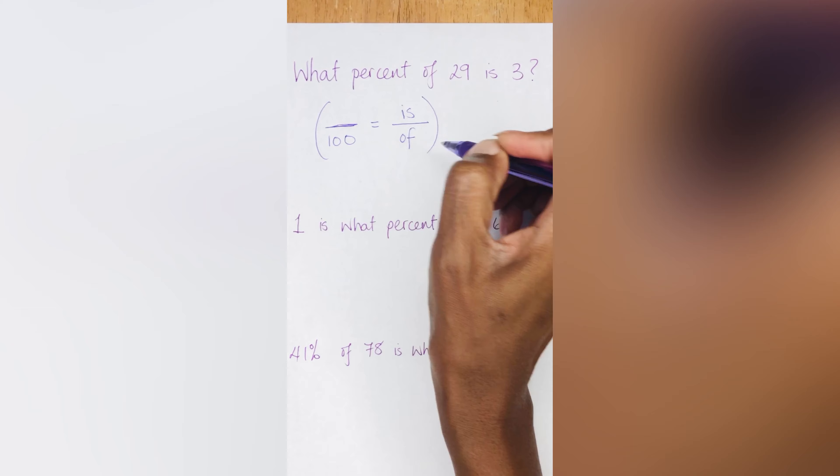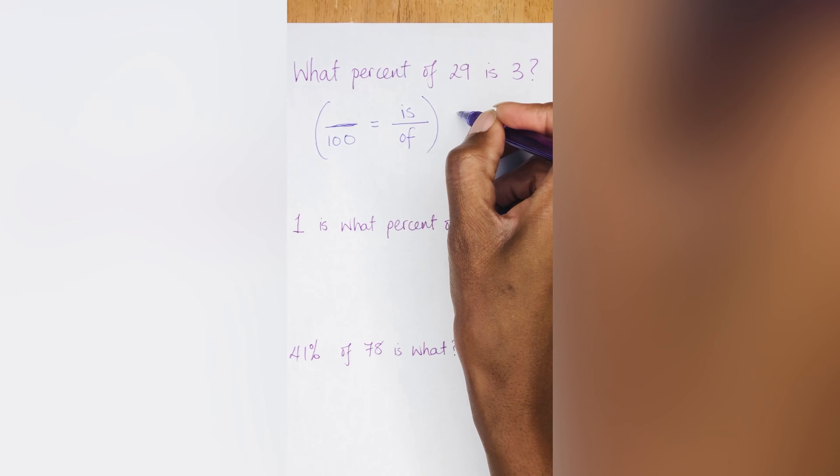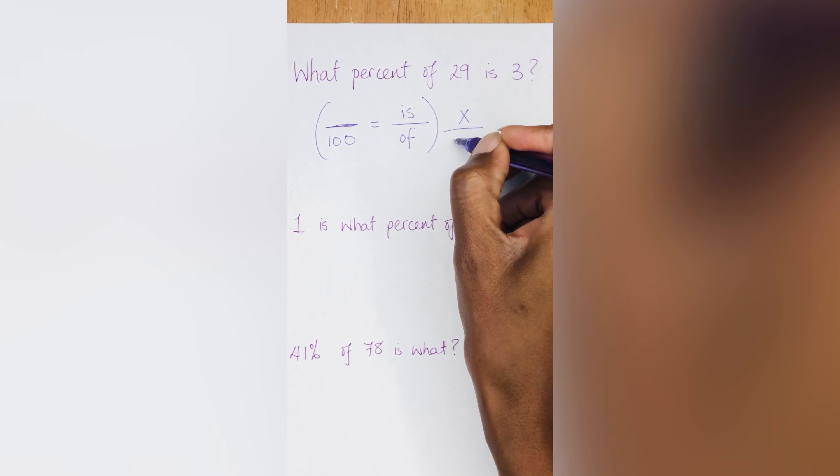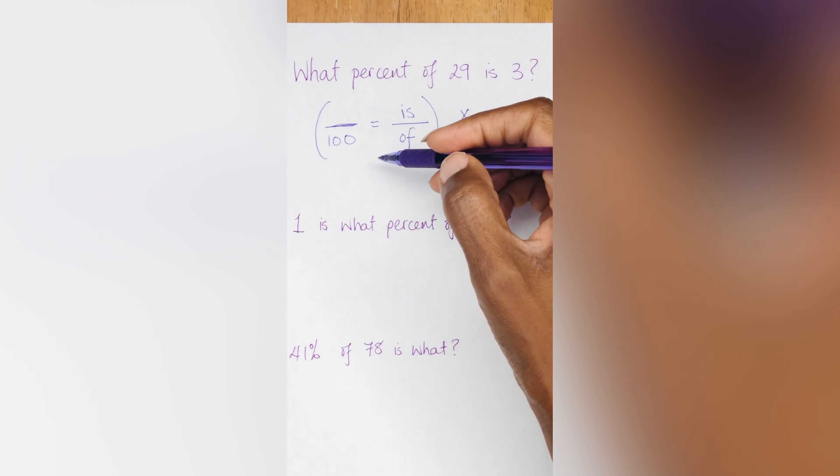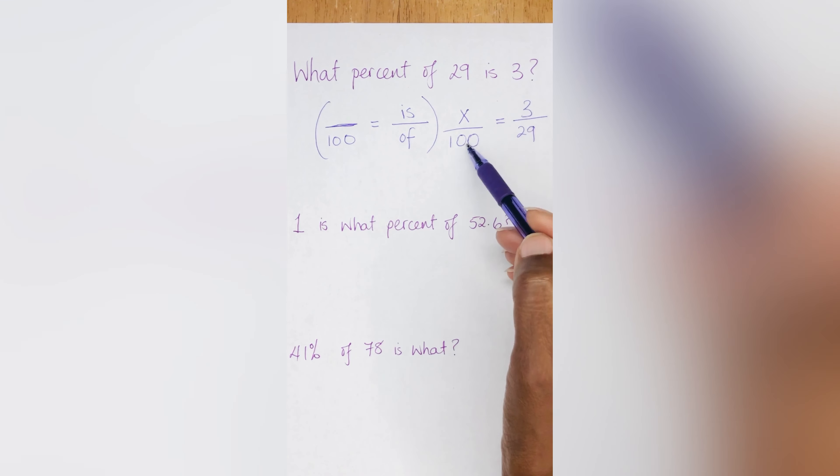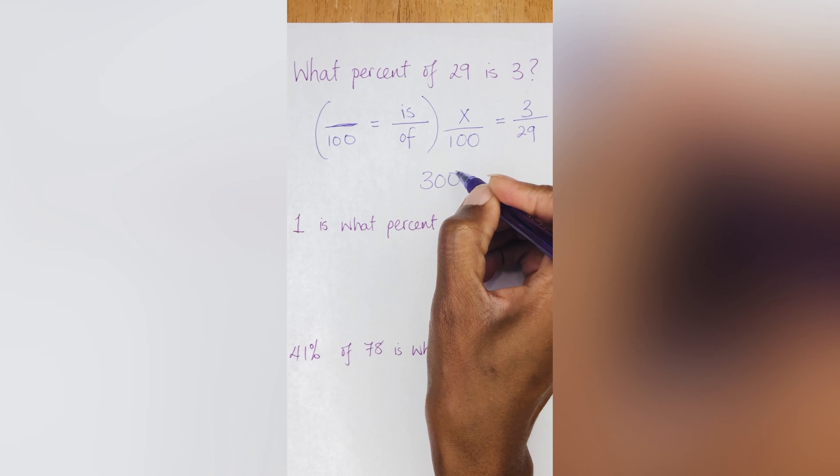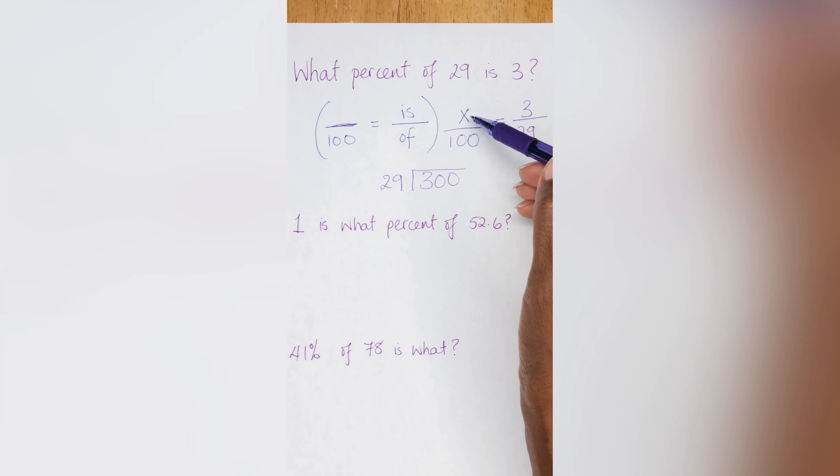So if we keep this formula in mind, then we can use it to do all of the questions. So what percent, using this formula 'is' going to be what percent, we're going to use X as the unknown, what percent of 29. So of 29 therefore goes as the denominator, is 3, right? So that's how you would set that up. So X over 100 equals 3 over 29. Then you go ahead and you do a cross multiplication. So 100 times 3, so you're going to have 300 and you're going to divide that by the 29. That way you're going to find out what the X is.